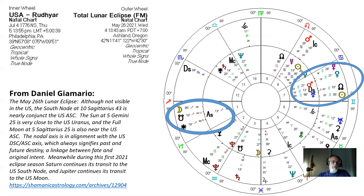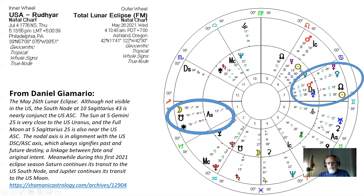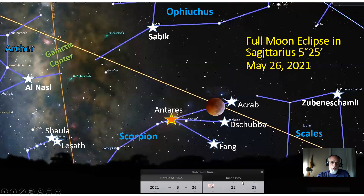In order for us to really embody our ideals in a country where we want harmony for all peoples, we can't ignore this. This eclipse season, the Saturn and Jupiter transits, really bring this up for us. And Uranus is also playing a significant role in its square relationship with Saturn.